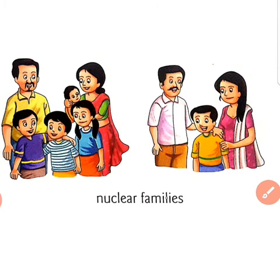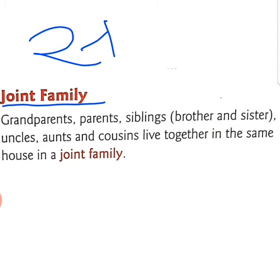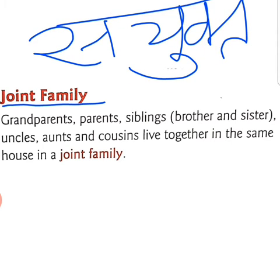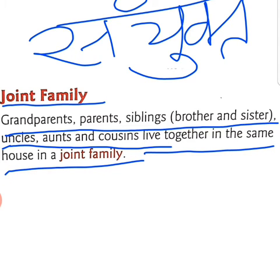Now let's move on to joint family. Nuclear family means ekal parivaar, aur joint family means sanyukt parivaar — mila hua parivaar. In a joint family, grandparents, parents, siblings (brothers and sisters), uncles, aunts and cousins all live together in the same house.